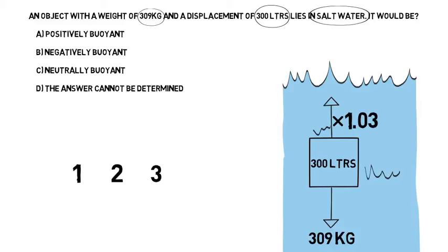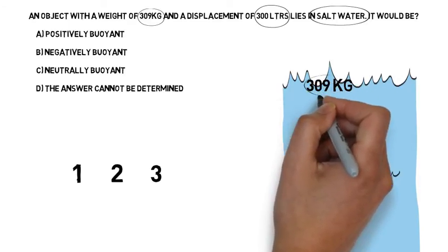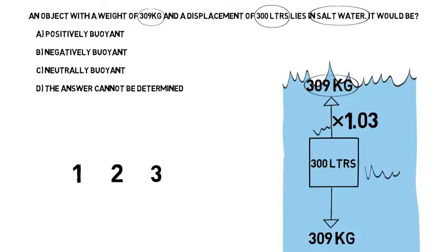We now have our first calculation. It's the volume multiplied by 1.03, which gives us an upward force of 309 kilograms. Now we know the upward and downward force.